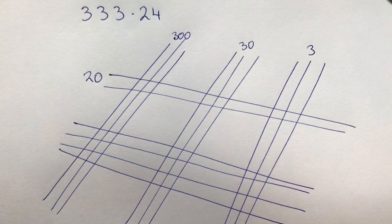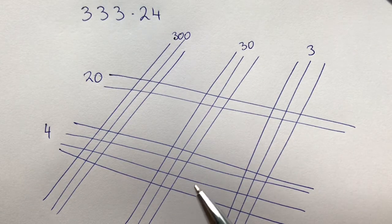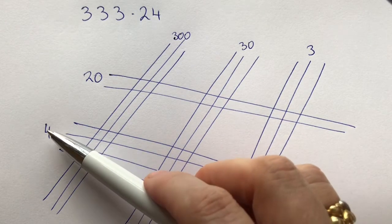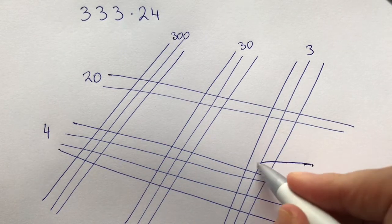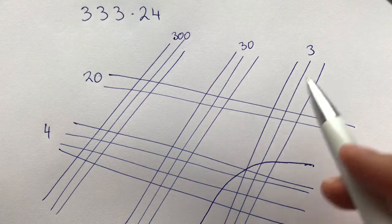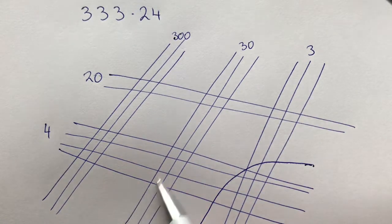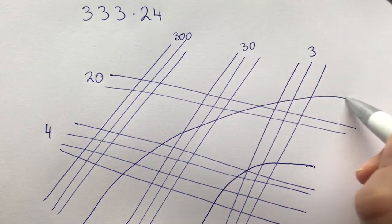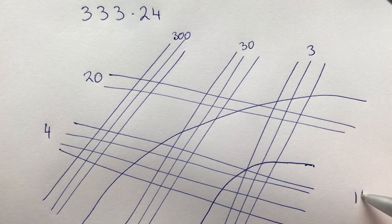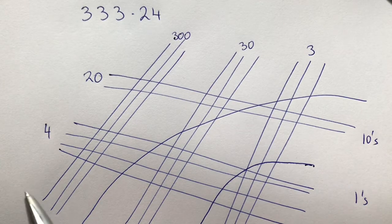Now we actually just have to divide the lines up. Which lines have the lowest value? Well, three times four is going to give us the lowest. So here we have our ones. Then here we have three times 20, so we're multiplying 10 units here, and here four times 30. So these two sections are multiplying — here we have our tens that we're multiplying in our tens.